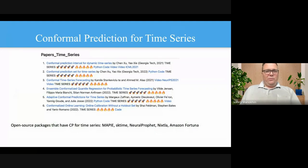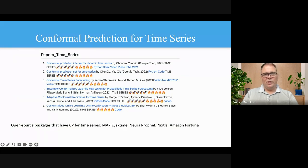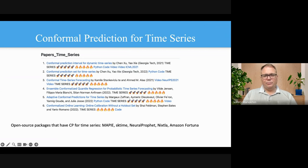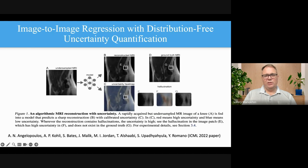Conformal prediction for time series has been an absolute blockbuster. The first paper was published at ICML 2021 and now we have many powerful algorithms. Essentially all of the most well-known time series libraries — like Nixtla and NeuralForecast — have implemented conformal prediction for time series. This is driving uncertainty quantification across open-source time series libraries because conformal prediction is basically the best framework for it.